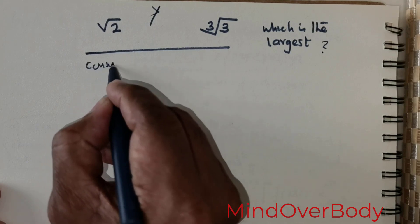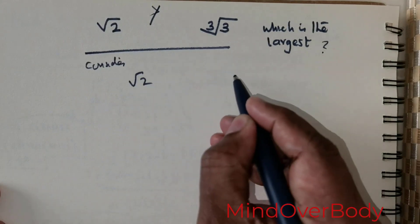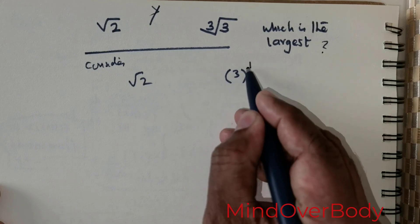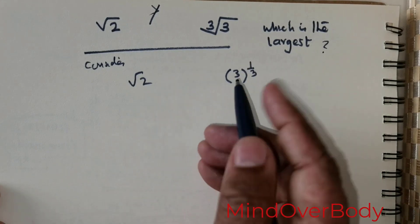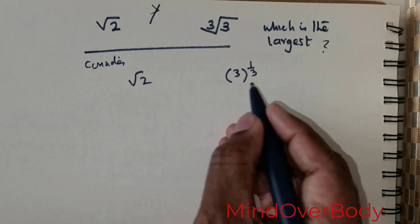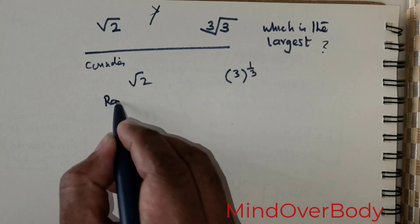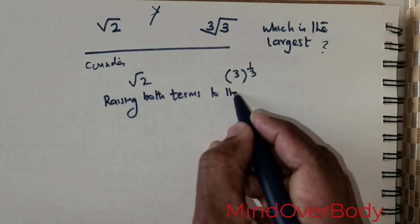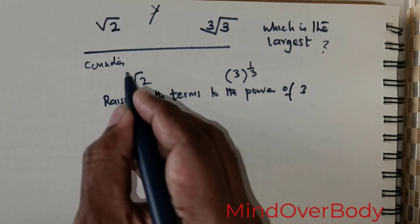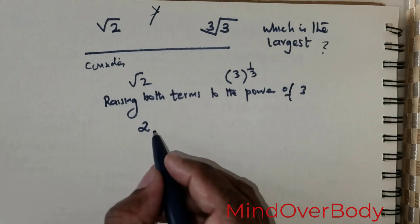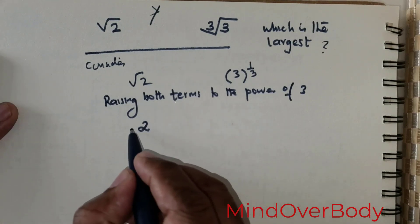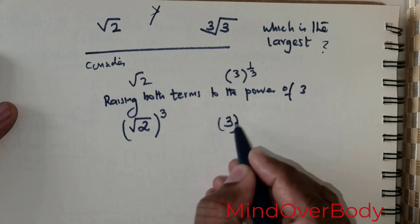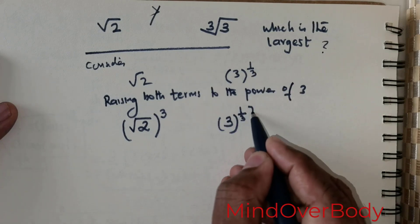Now let me consider root of 2 and the third root of 3. I can write this third root of 3 as 3 raised to the power of 1 over 3. Now what I am going to do is I am going to raise both the terms to the power of 3. This is root 2, so I am going to write root 2 like this and then raise it to the power of 3, and 3 with 1 over 3 raised to the power of 3.